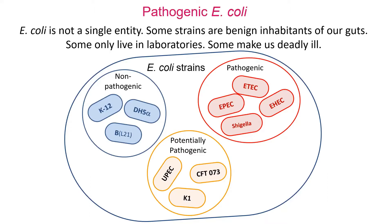We had seen this slide before. E. coli has many strains out there — most of them are good for us, there are a few nasties. Some are opportunistic pathogens, like uropathogenic E. coli, which just gets into the wrong place — into your urethra or bladder — causing an uncomfortable infection. But there are a few strains, with fancy acronyms like ETEC and EPEC, that are actually pathogenic. I want to talk about why those strains are pathogenic while others are not.